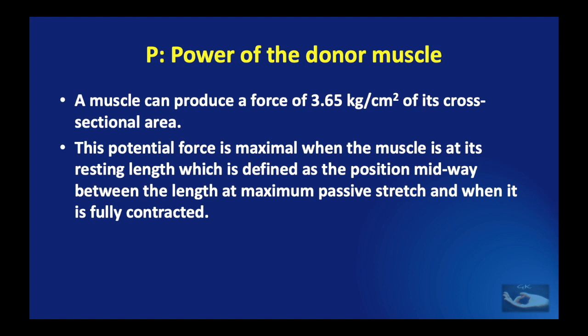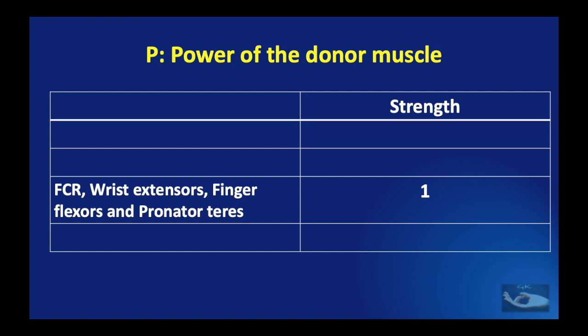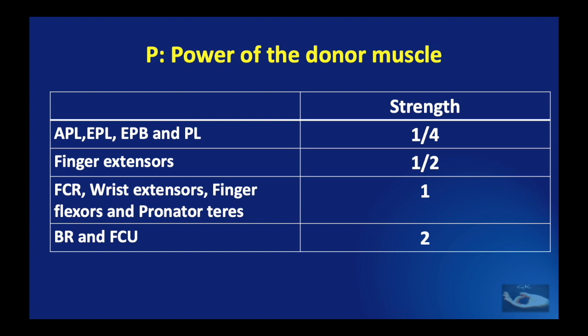As far as the upper limb is concerned, it is not necessary to remember the power of every single muscle. What we need to understand is the comparative strength between different muscles. If we consider the strength of the flexor carpi radialis, wrist extensors, finger flexors, and pronator teres as about 1, then the brachioradialis and flexor carpi ulnaris have twice the strength, the finger extensors have only half the strength, and the abductor pollicis longus, extensor pollicis longus, extensor pollicis brevis, and palmaris longus have only a quarter of the strength.